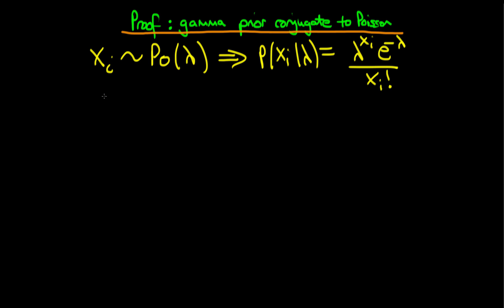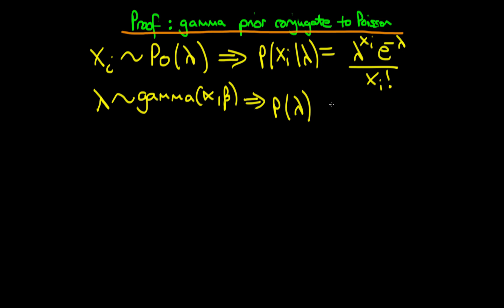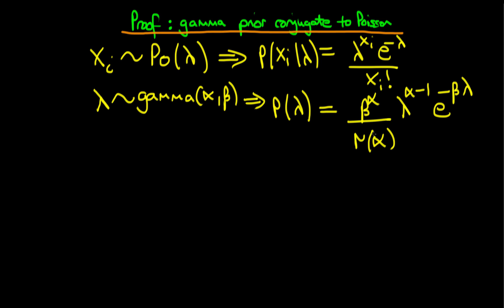Let's now write down the prior. The prior is on the parameter lambda, which we're assuming is gamma distributed with parameters alpha and beta. That means we can write down the probability distribution representing our prior. So the probability of lambda, technically given alpha and beta, is equal to beta to the power alpha, all divided through by gamma of alpha — the gamma function of alpha, which is the continuous equivalent of the factorial function — times a kernel of lambda to the power alpha minus one times e to the power minus beta times lambda. So that's our prior distribution.